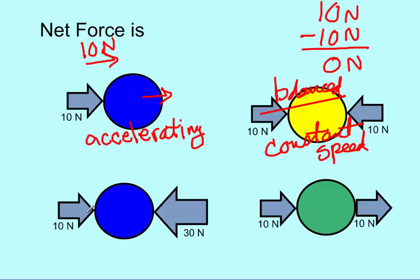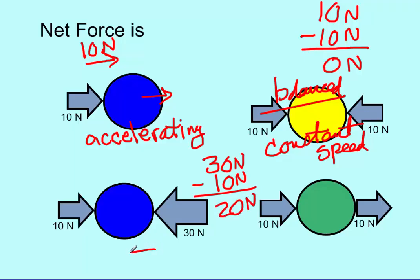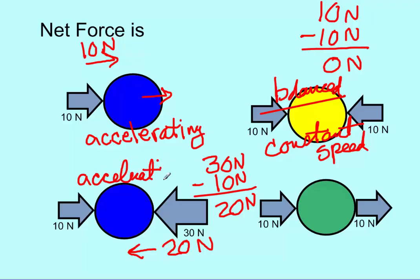In this case, we have 10 newtons to the right and 30 newtons to the left. So 30 newtons minus 10 newtons gives me 20 newtons. The overall net force on this is 20 newtons to the left. We always have to give the direction of the force. With an unbalanced force like this, it is accelerating — in this case, it's accelerating to the left.